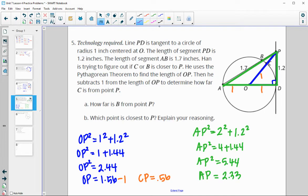And now in this case, A to B is 1.7. So we'll subtract 1.7 to figure out how long BP actually is. And so then we get BP to be 0.63. So point B is 0.63 away from P. And point C was 0.56. So answer to part A was 0.63. And then which point was closer? Point C was closer.